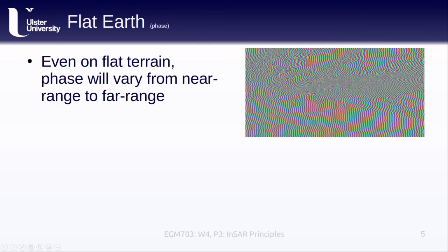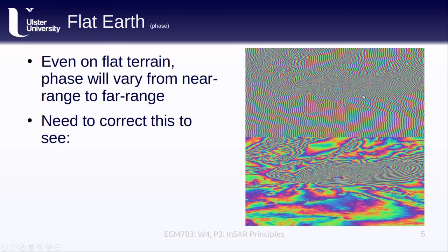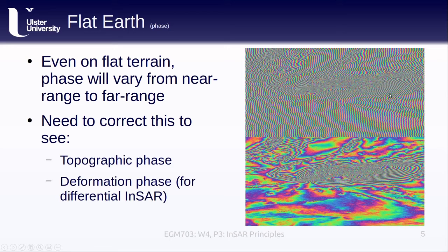So even on flat terrain, the phase in an interferogram will vary from the near range to the far range. This is known as the flat earth phase. In order to see what we want to see, such as the topographic phase or the deformation phase, then we need to correct this. In the example here, which is based on the images that we used in this week's practical, we see how removing the flat earth phase from the interferogram completely changes the picture. And what we're left with, at least in this case, is the combination of the ground displacement due to an earthquake and the phase due to the topography in the image.